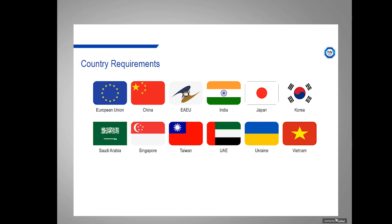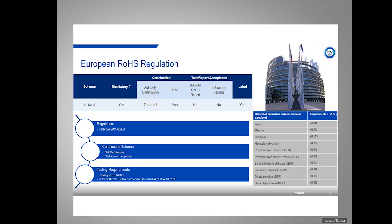We have 12 different countries and regions that we will go over today, and we're going to start with the European Union. The European ROHS regulation is the basis of the regulations across the rest of the world, which is why we start with Europe. The European scheme is called CE-ROHS, part of the CE Marking scheme. It is a mandatory regulation and a self-declaration scheme, although you can get a certificate from an accredited body if you wish. Testing can be done at any accredited lab — it doesn't have to be in Europe — and the labeling follows the CE marking scheme.